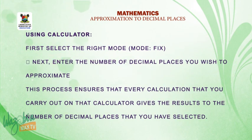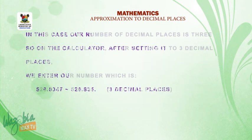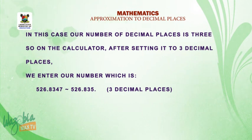Now, using the calculator, as I mentioned earlier, we set our mode to Fix. The next thing, you need to enter the number of decimal places you wish to approximate. This process ensures that every calculation that you carry out on that calculator gives the result to the number of decimal places that you have selected. In this case, our number of decimal places is 3. So, on the calculator, after setting it to 3 decimal places, we enter our number which is 526.8347, and then we click on Equals to. Automatically, it gives us our answer to 3 decimal places, that is 526.835.